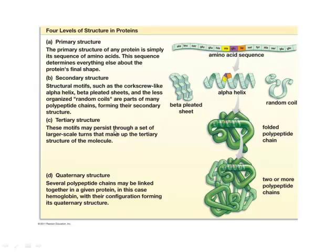Tertiary structure — here is where we get the shape. We see a three-dimensional folding of the polypeptide chain that provides a shape. Remember, shape is critical to the functioning of proteins. All proteins have at least the first three levels of structure.